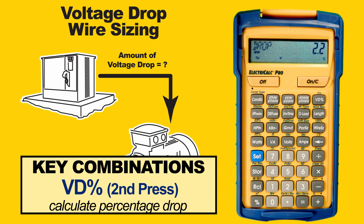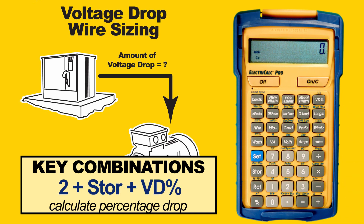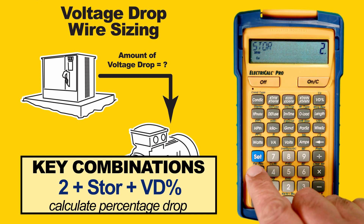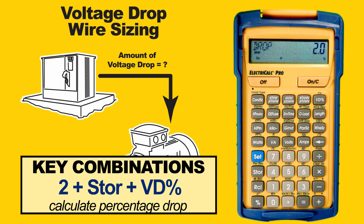Another way to use this feature is to find the maximum length you can go with a known load and wire size. For this example, we will set our voltage drop limitation to 2% by pressing 2, then Store, then Voltage Drop. We see on the screen that voltage drop is now stored at 2%. We can press Clear, but that value will stay set.